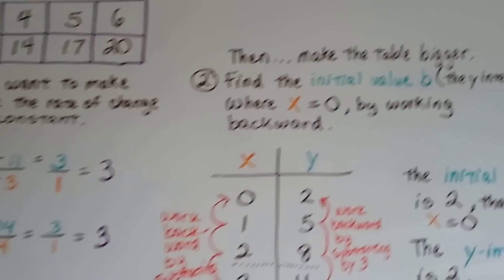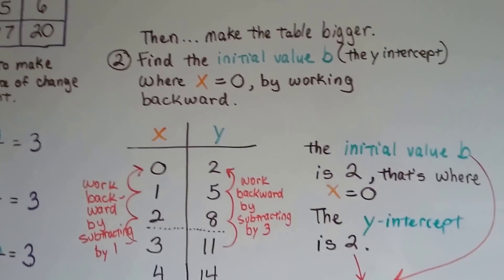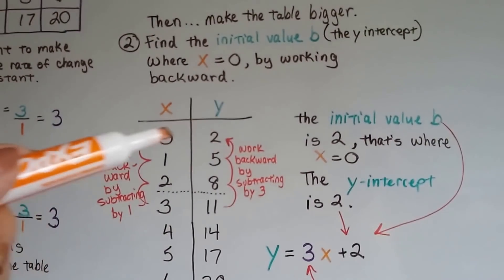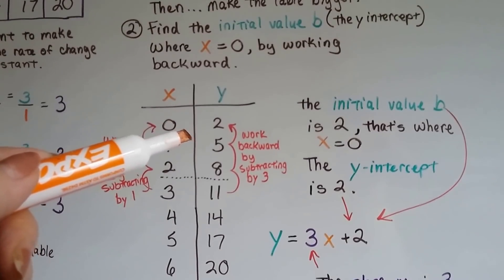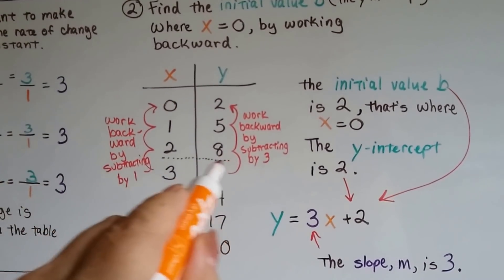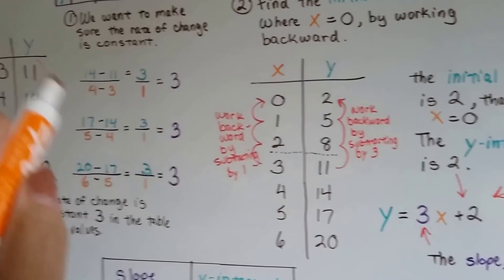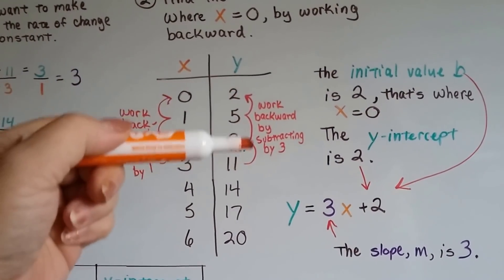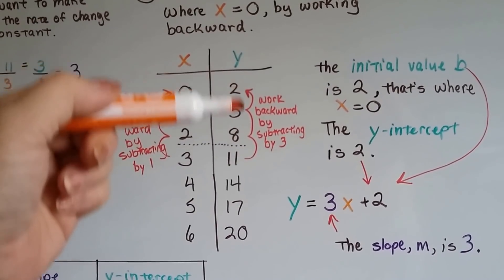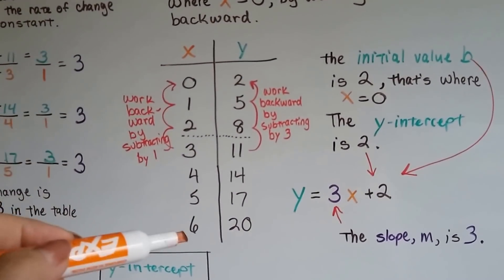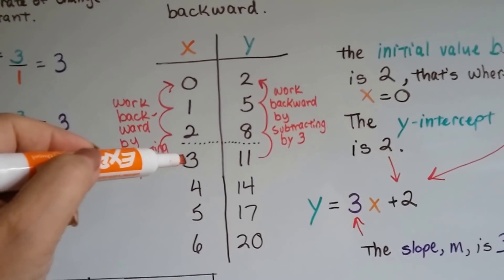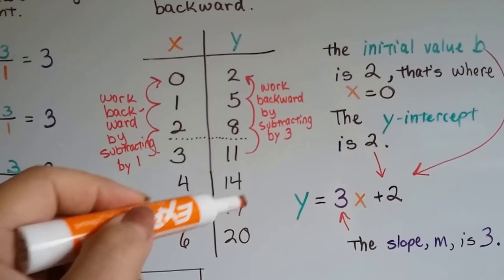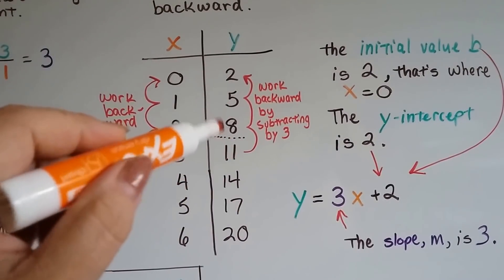So the second thing we do is we make our table bigger to find that initial value b, where the x is a 0. That's where the y-intercept is. So we work backwards. So our table ended here before. We just had a 3 and 11. So now I extended my table and made it taller with more small values here. Since these were working back by 1, I kept working back by 1. 3, 2, 1, 0.